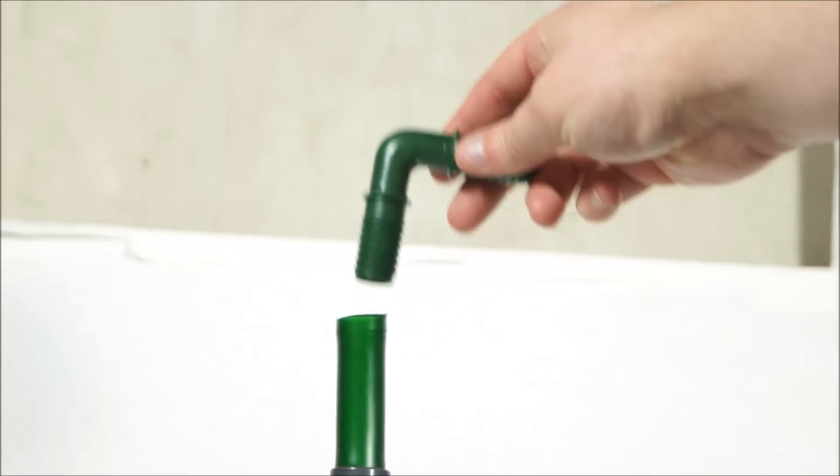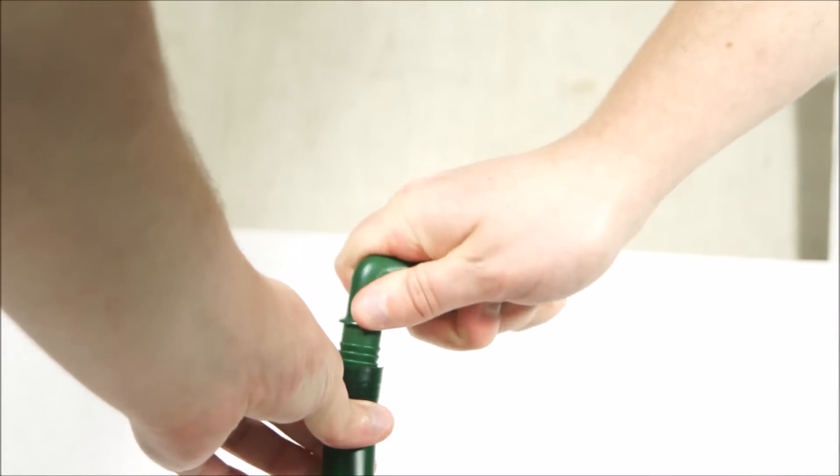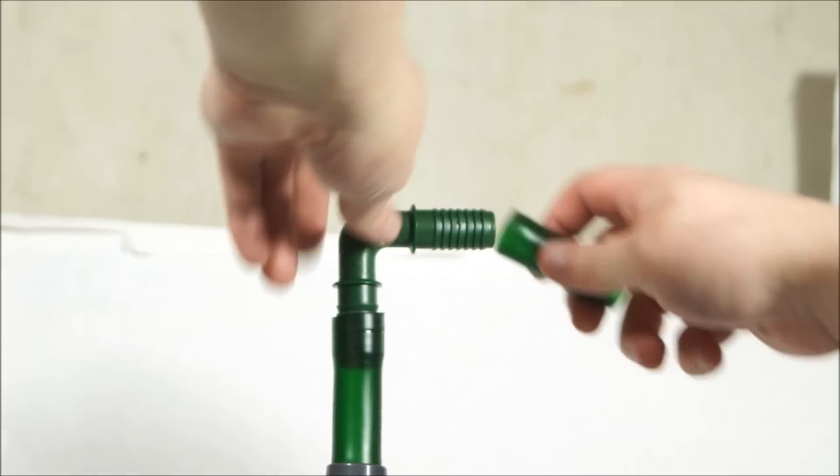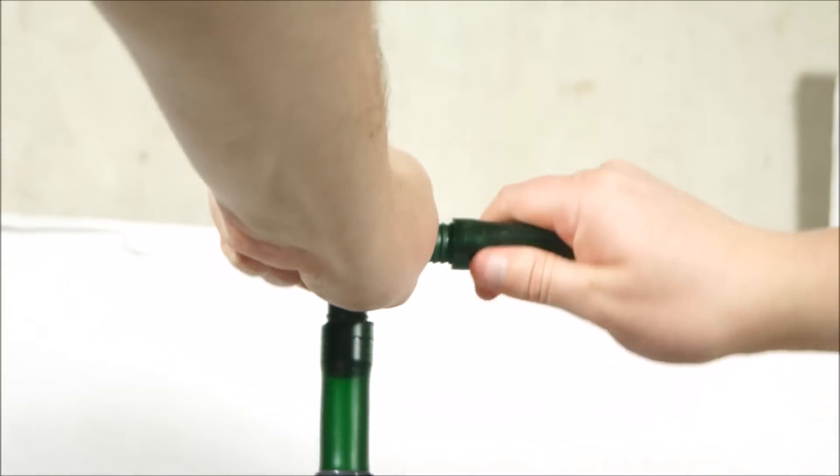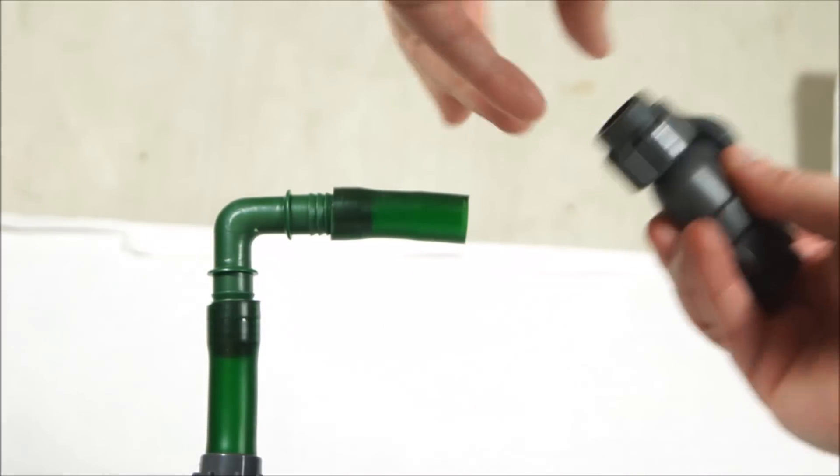Next you will want to attach a 90 degree hose barb. My suggestion is to heat the tubing and use Vaseline on the hose barb in order to get a clean tight fit. Next you want to place just enough tubing on the end of the elbow so you can attach the supplied valve.